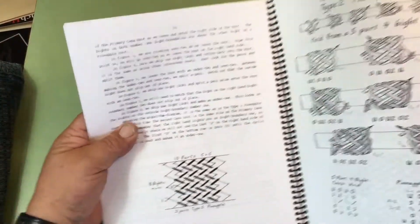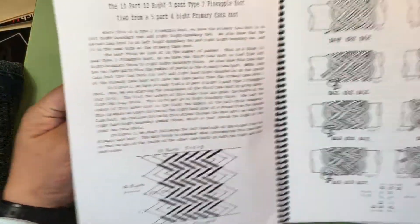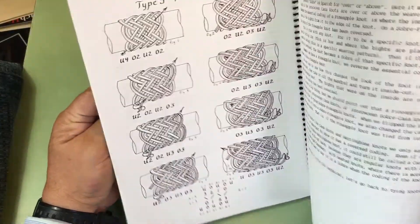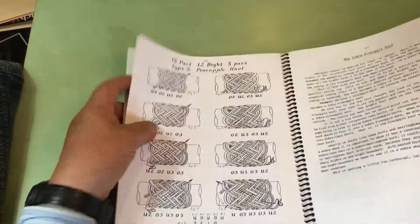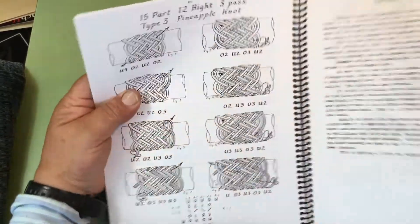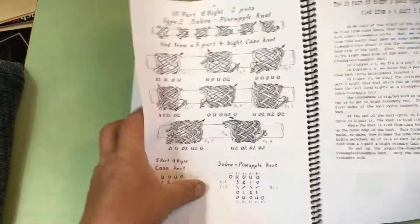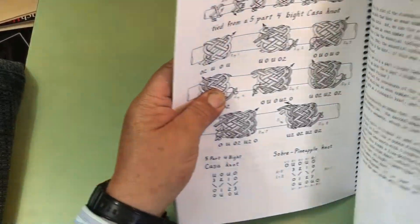as you go through the book, you'll be able to see how you use and set up. That's a type three, three-pass. Okay, sobre pineapples. That's how you, you can see how you set those up.